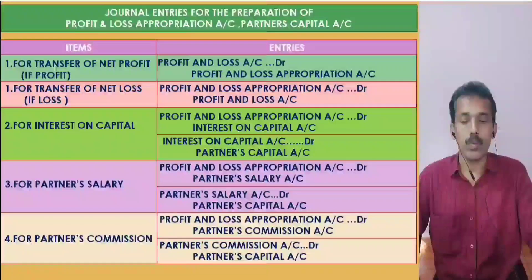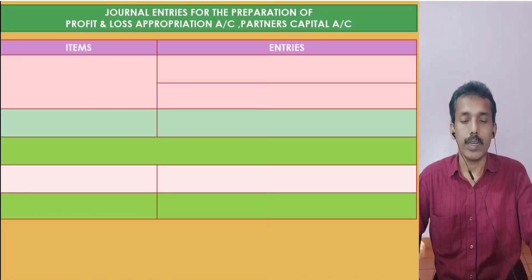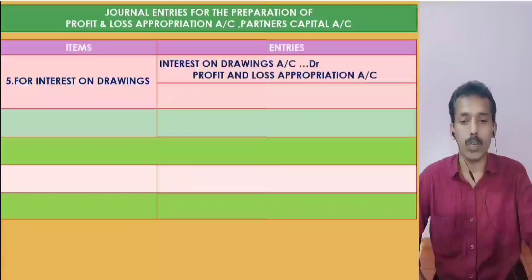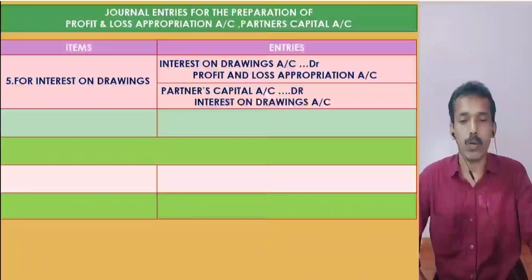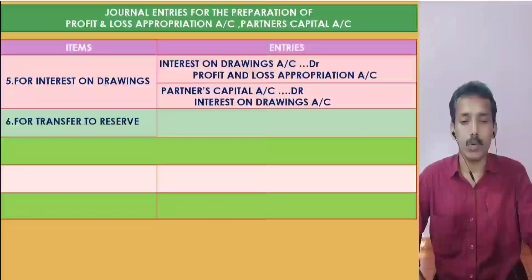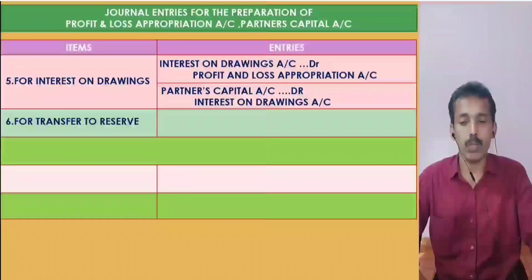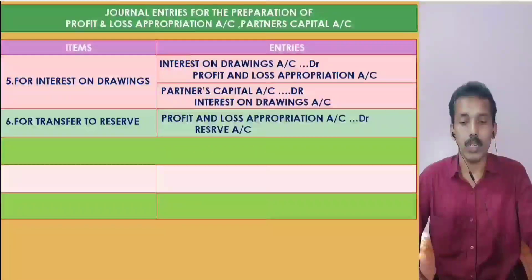For interest on drawings: Partners' Capital Account Dr., to Profit and Loss Appropriation Account. For transfer to reserve: Profit and Loss Appropriation Account Dr., to Reserve Account. This is not transferred to the capital account; it is transferred to the firm's reserve.